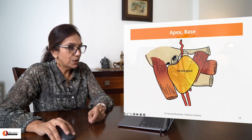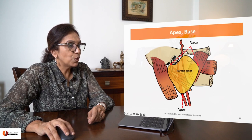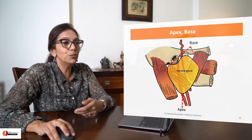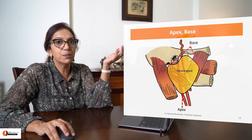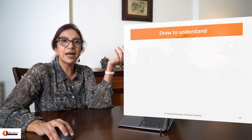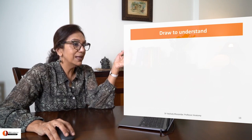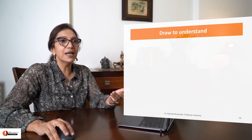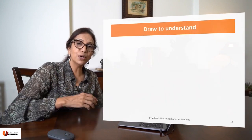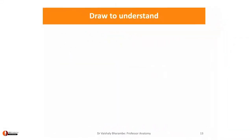This pointed lower end of the parotid gland is called the apex; this broad base on the top is called the base — more about this will be discussed later. Now let us draw to understand. Before we get into surfaces and borders, let us draw to understand them and then we will take it from there. Please take your colour pencils, dear students, and let us begin a diagram.